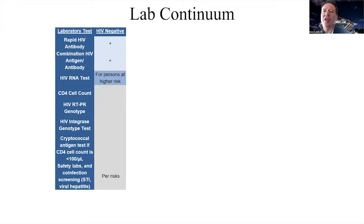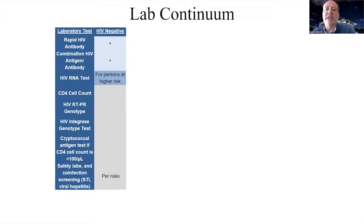So we set up this way of thinking. You have someone who comes in who's HIV negative, they're at risk, and they need to get tested for HIV. Different tests available include rapid HIV antibody, a combination HIV antibody and antigen, or perhaps an RNA test for someone who's high risk and you're suspecting very acute infection. And there's also safety labs and co-infection screening, such as sexually transmitted infections, viral hepatitis, et cetera.